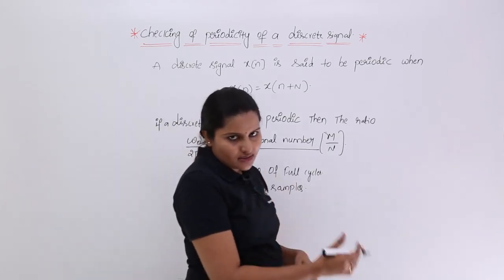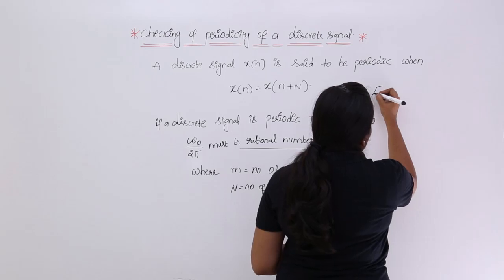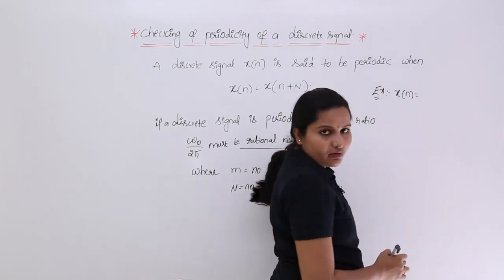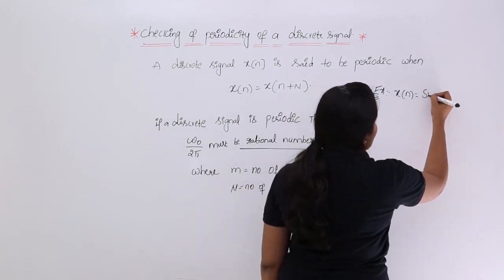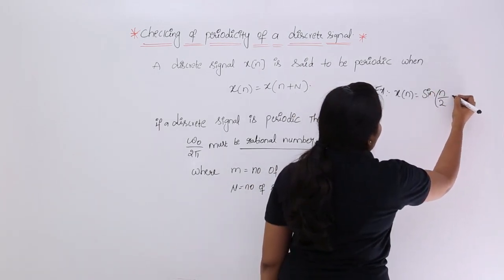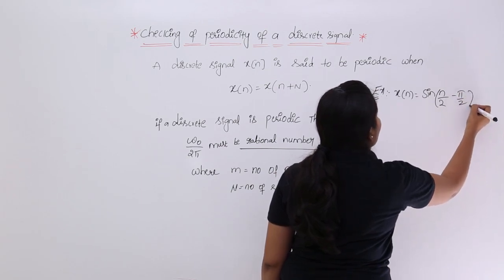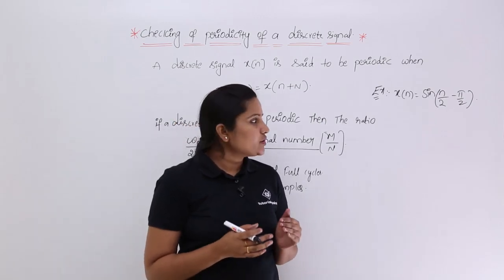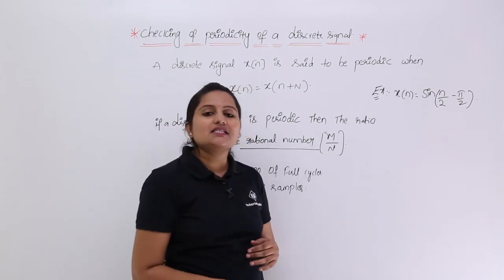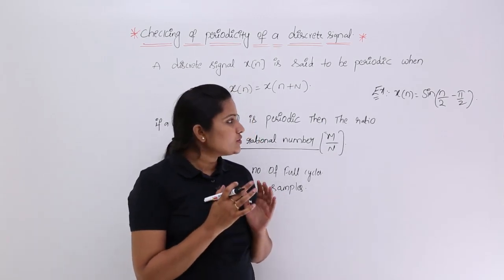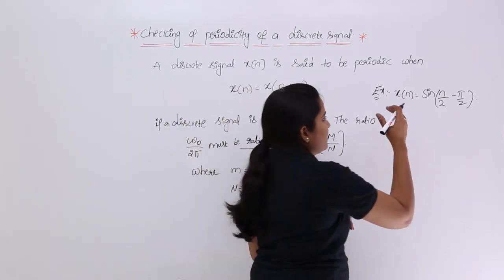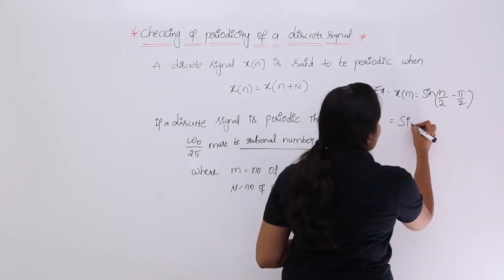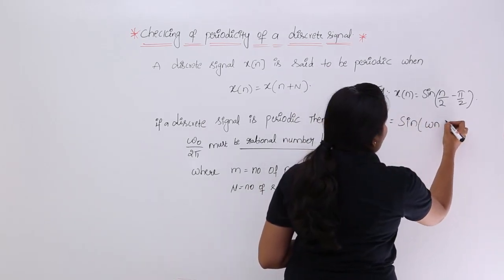Now let's consider Example 1. The given signal is x(n) = sin(n/2 − π/2). To check whether this signal is periodic or not, we compare it with the basic definition of a discrete sinusoid: sin(ωn ± φ), where φ is the phase.